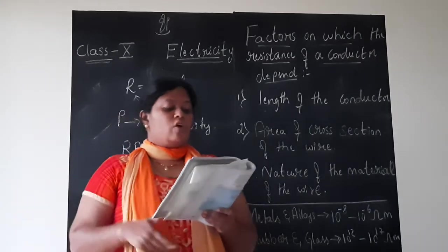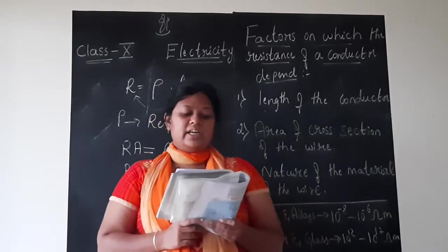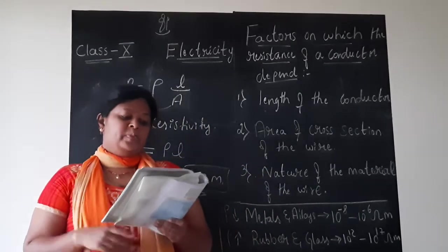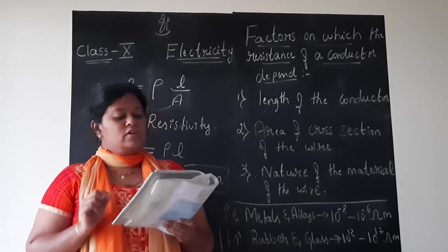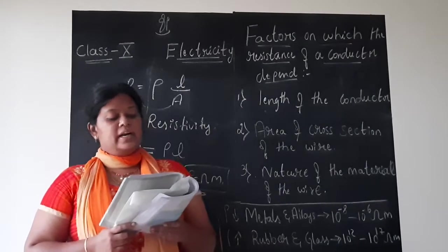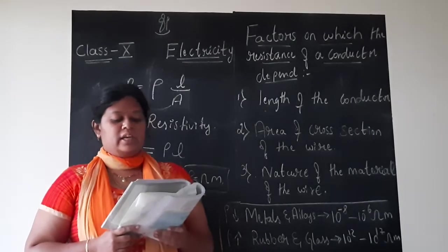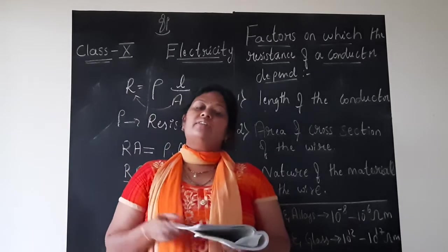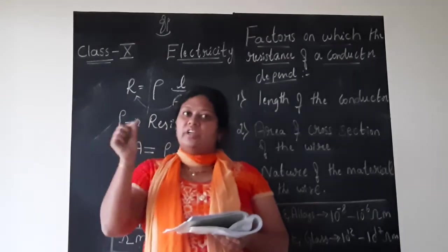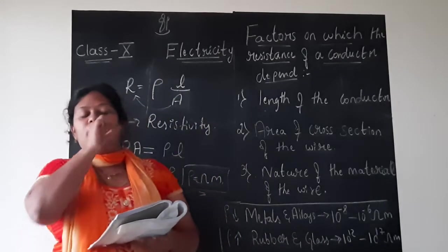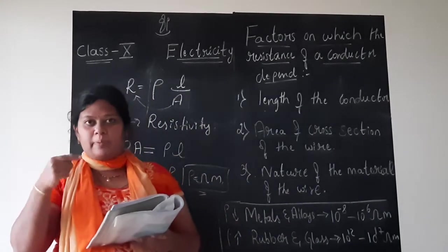For this reason, they are commonly used in electrical heating devices like electric iron, toasters, etc. Tungsten is used almost exclusively for filaments of electric bulb, whereas copper and aluminium are generally used for the electrical transmission lines. So what you see, the conducting wires will be inside the insulation. If you cut open the plastic insulation part, you will see they are mainly the copper or the aluminium wires.